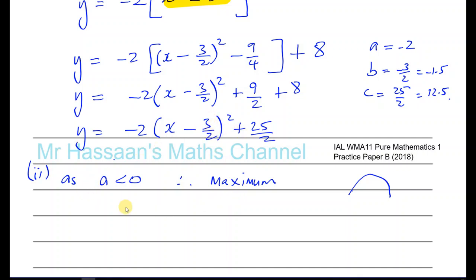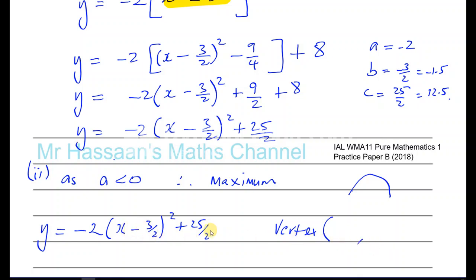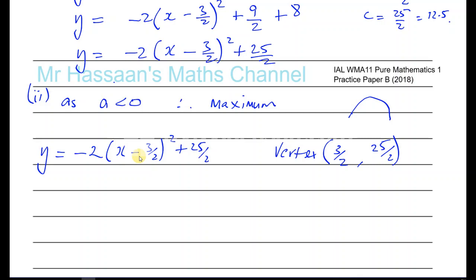We want to find the vertex. When we have the equation in completing-the-square form — minus 2 times x minus 3 over 2 squared plus 25 over 2 — the vertex, which is the maximum in this case, is always the opposite of the number inside the bracket for the x-coordinate, giving 3 over 2, and the same as the constant outside the bracket for the y-coordinate, giving 25 over 2. Some people memorize this rule, but I prefer students to understand the reason.